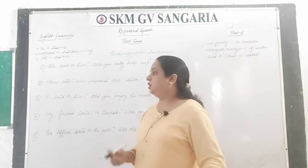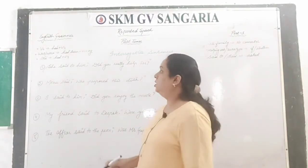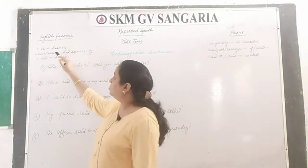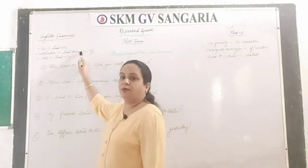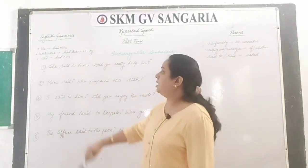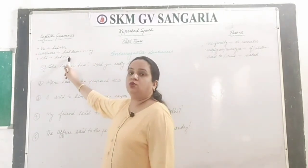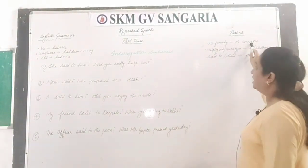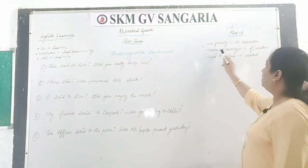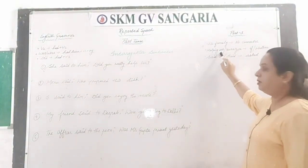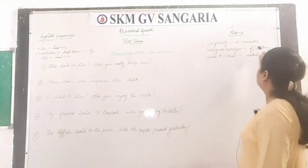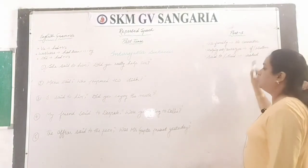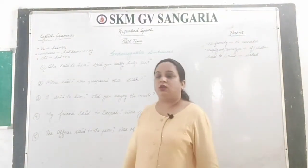Now let's solve questions of interrogative sentences in past tense. The same rules apply: verb second changes into had plus verb third; was/were changes into had been plus verb first plus ing; did changes into had plus verb third. For WH-family questions, no connector is used. For yes/no type questions starting with helping verbs, use 'if' or 'whether' as connectors, and 'said to' or 'said' changes into 'asked'.